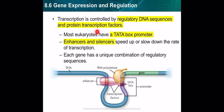Transcription is controlled by regulatory proteins, regulatory DNA sequences, and protein transcription factors. Most eukaryotes have a TATA box promoter — this is called the TATA box due to its sequence. This acts like a promoter. There are also enhancers and silencers: enhancers speed up the transcription process, silencers slow it down.